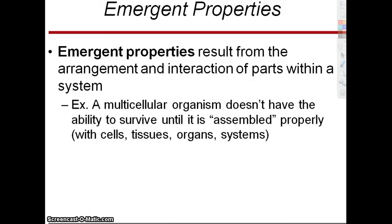If you have wheels and a chain and whatnot, you don't actually have a bicycle — you can't call it a bicycle until it's assembled. The same thing is true here. If you're talking about a living multicellular organism, it's not actually a dog until you assemble it with a circulatory system and a respiratory system. Those systems consist of organs — the circulatory system has arteries, veins, and the heart. These properties don't emerge until you get to a particular level and there's organization in a particular way.